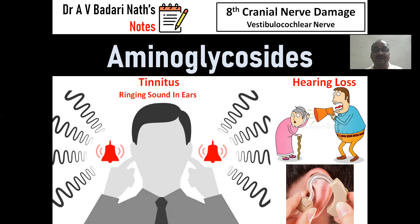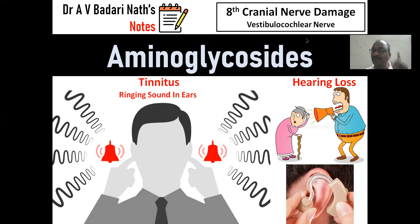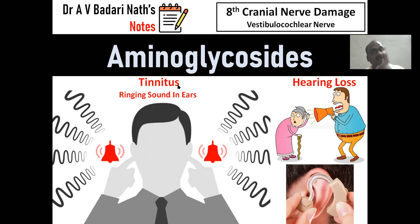That is the hearing loss — that is the main disadvantage of aminoglycosides. One fine day the doctor will prescribe you a hearing aid. You have to install it. So this point you have to keep in your mind. Eighth cranial nerve damage — in anatomy and physiology subject, it is the vestibulocochlear nerve. Aminoglycosides is pharmacology, but there is a relationship between pharmacology and anatomy and physiology.